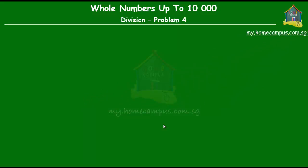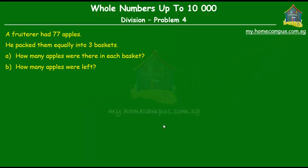Hello and welcome to my.homecampus.com.sg. Let's solve this problem on division. A fruiterer had 77 apples. He packed them equally into three baskets. How many apples were there in each basket and how many apples were left?